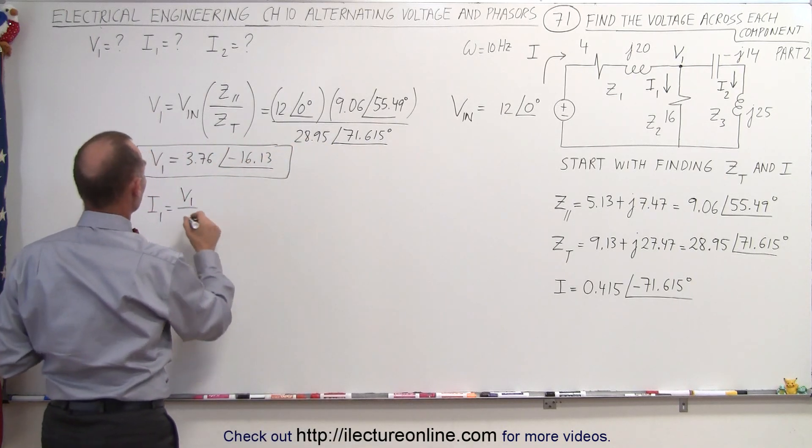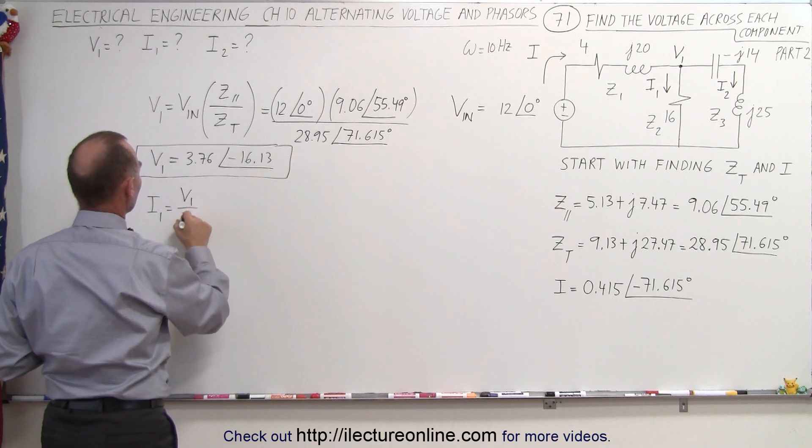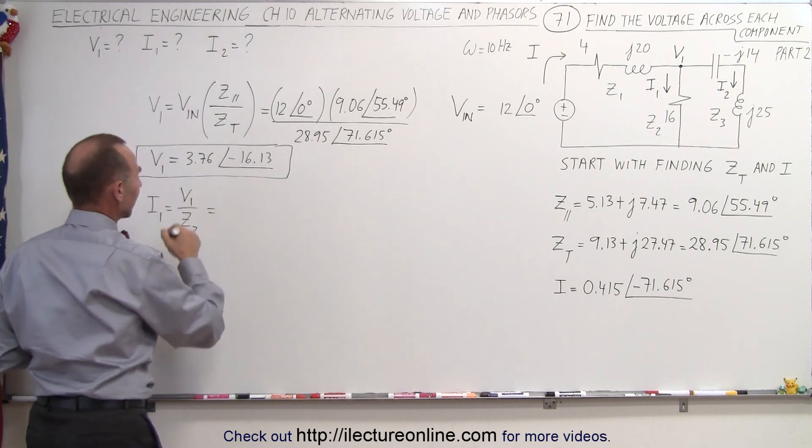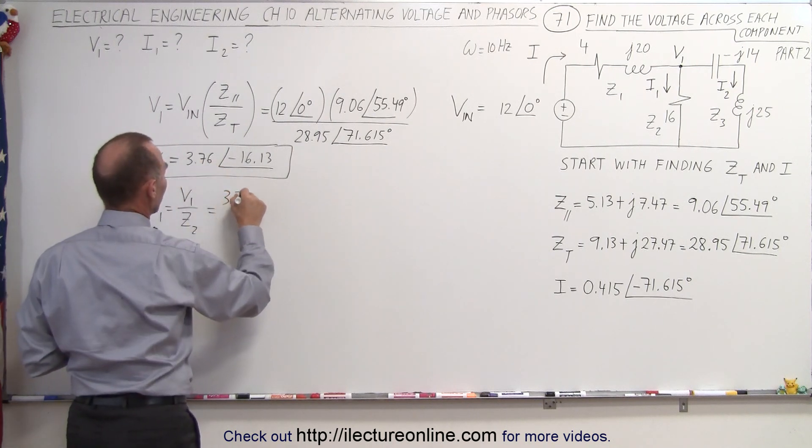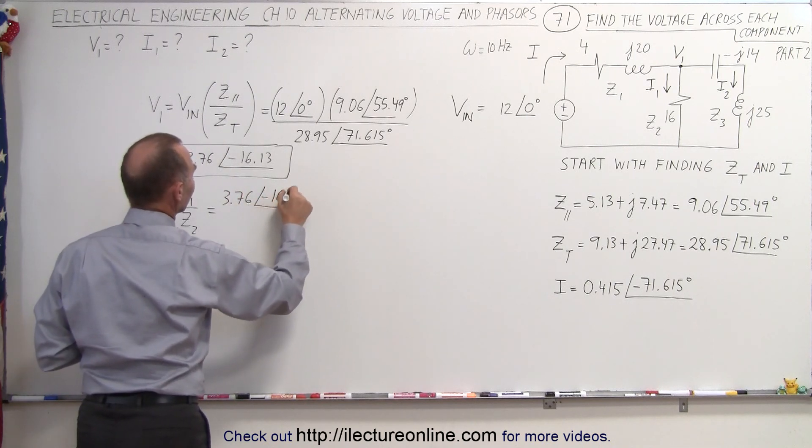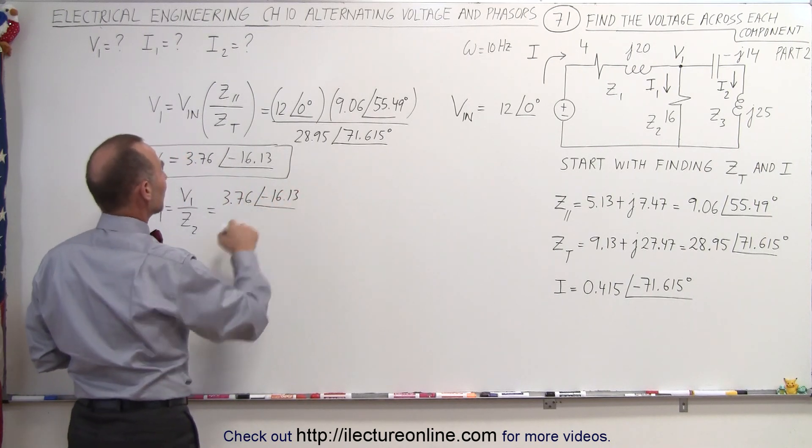and Z2 has a single resistor in there, so we'll just call it Z2 for now. So when we plug that in, V1 is 3.76 with a phase angle of minus 16.13